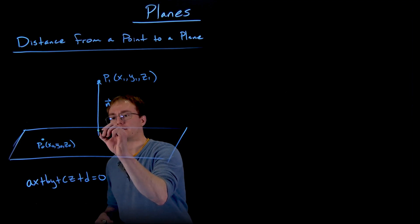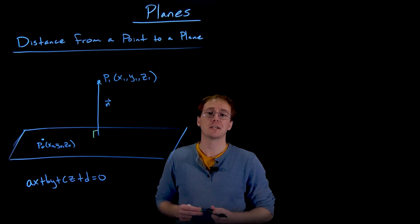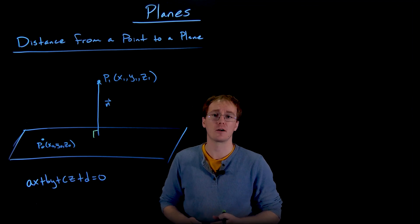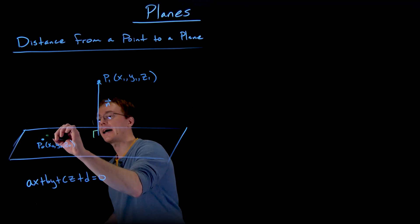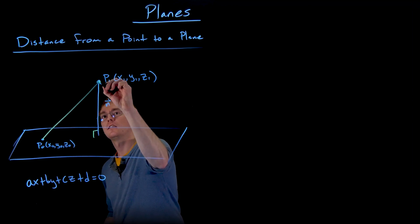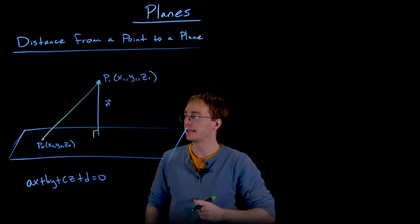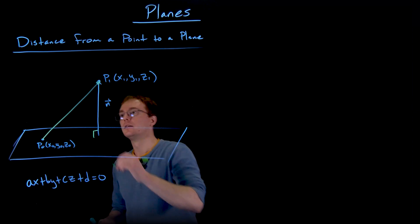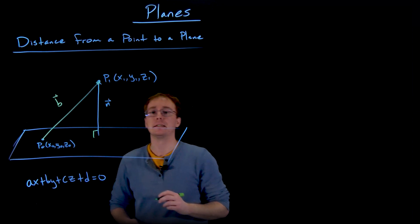We know this normal vector comes out at a 90-degree angle, and now it's actually just going to be some right triangle trigonometry and dot product that finishes the work off for us. We can also add another vector to this picture: the vector that goes from a known point in our plane, like P0, to the point of interest P1. Let's go ahead and call this vector b.